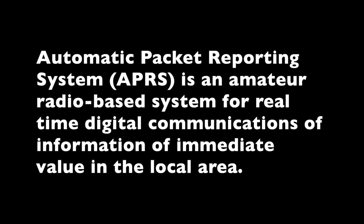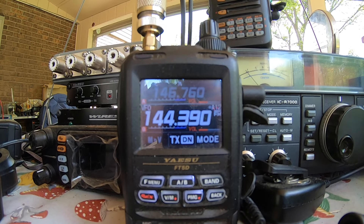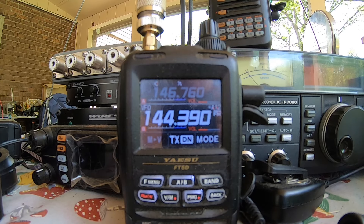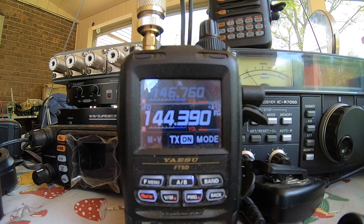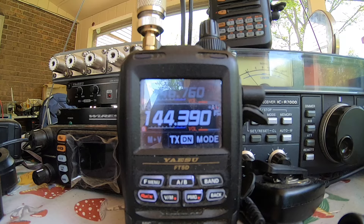What you'll have is a radio set to 144.390 — that's the North America packet frequency. You'll be sending your packets on that frequency and listening for them, and you'll have a radio that will display it. So stay tuned for a bit more fun as we discuss a little bit about APRS.